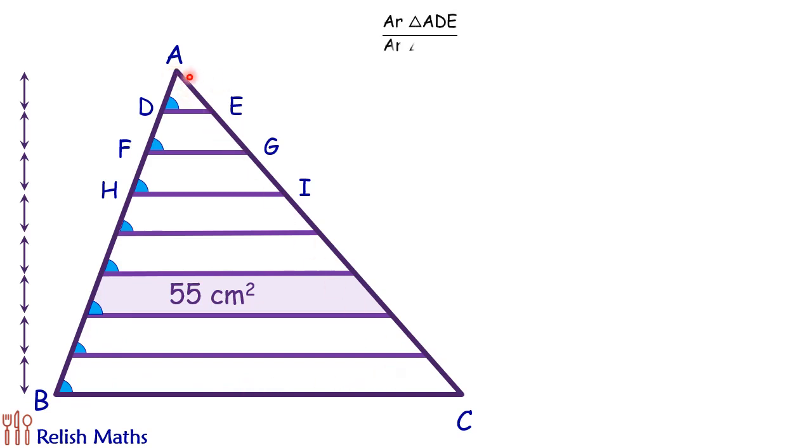Now when we are comparing area of triangle ADE upon area of triangle AFG, we know that the area ratio is equal to the square of ratio of sides. So this will be equal to (AD/AF)².